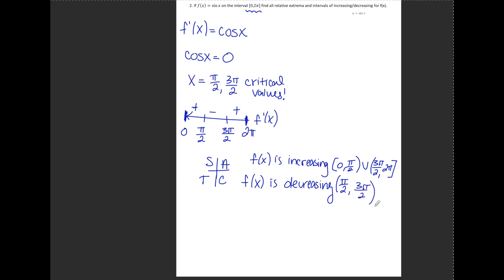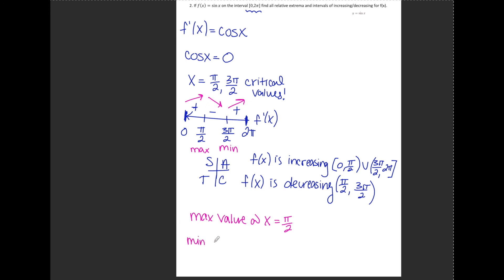The last thing I need to figure out is maxes and mins. From 0 to π/2, f was increasing, and from π/2 to 3π/2, f was decreasing — so at x equals π/2 I have a maximum. From 3π/2 to 2π, f was increasing, so going from decreasing to increasing at 3π/2 gives me a minimum. Therefore, there is a relative maximum at x equals π/2 and a relative minimum at x equals 3π/2.